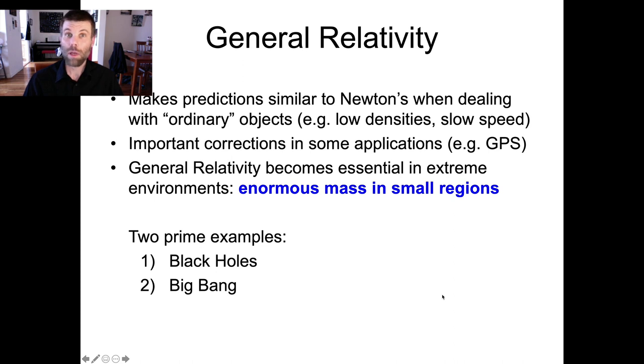However, if you get into really extreme environments, when the speeds of objects are very fast or when the density of matter is very high and therefore gravity becomes strong, general relativity produces dramatically different outcomes than you would expect based on Sir Isaac Newton. The two most commonly known scenarios that involve strong general relativity are black holes and the Big Bang.